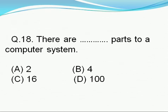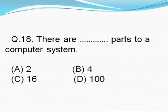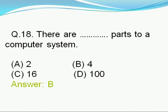Question number 18: There are how many parts to a computer system? Option A: 2, option B: 4, option C: 16, option D: 100. Right answer is B, i.e., 4. There are four parts to a computer system.